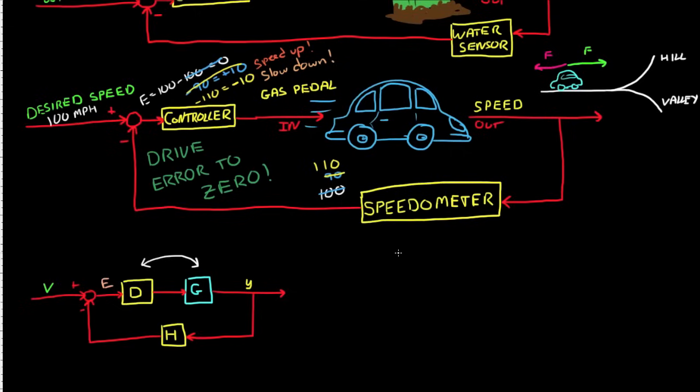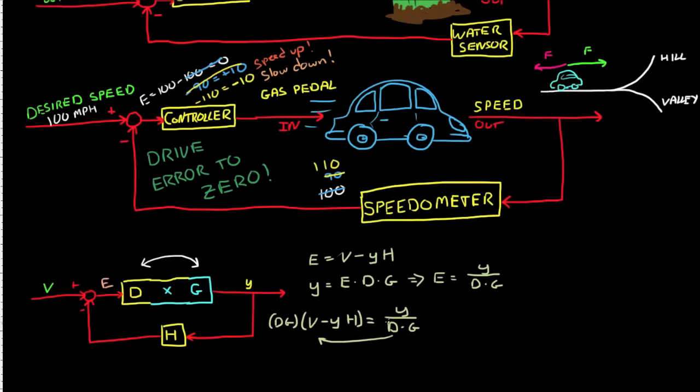We can then reduce this block diagram even further. For example, we can multiply D and G to combine into a single block. To reduce further, however, takes a small amount of algebra. The error signal is the reference signal V minus the output Y times the sensor process H. The output Y is the error term times D times G. Now solve this equation for E, which will give you Y over DG. Now you can set both equations equal to each other, and through a few more algebraic steps, you can solve for the variable Y with respect to V.